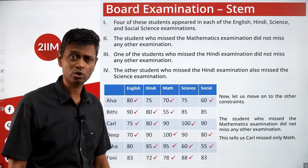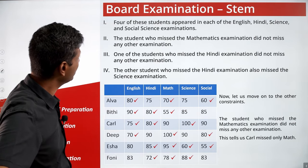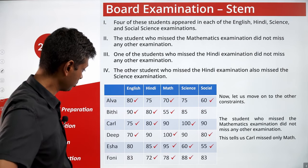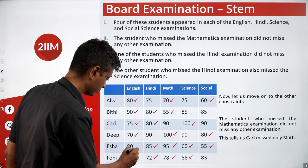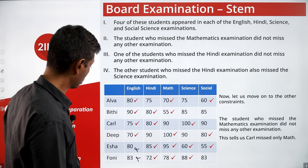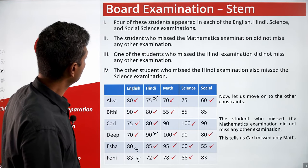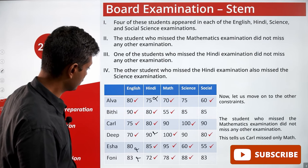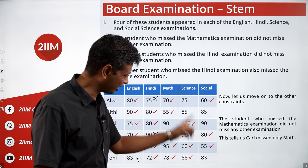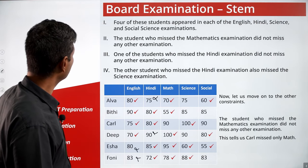Now let's apply the remaining four constraints. Four students appeared in each of English, Hindi, Science, and Social Science. For English, four appeared — that means Isha and Phony did not appear for English. For Hindi, four appeared — that means Deep and Alba did not appear for Hindi. For Science and Social, we have only three each confirmed so far.